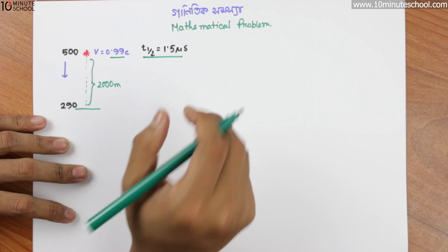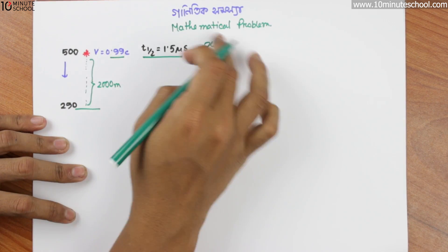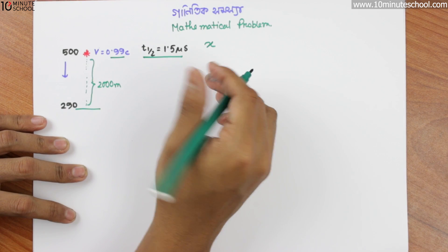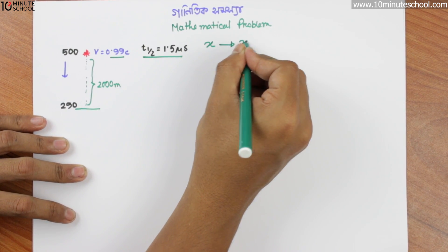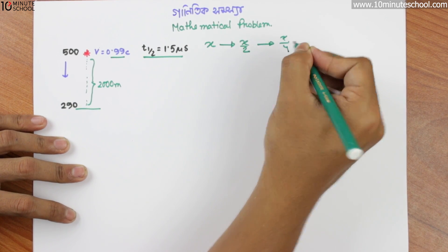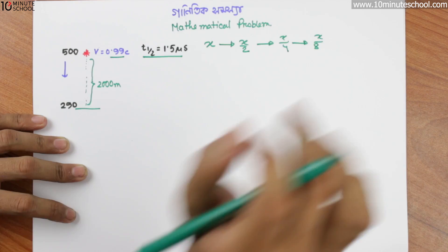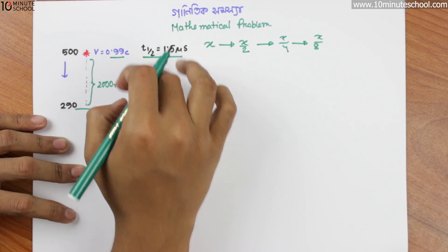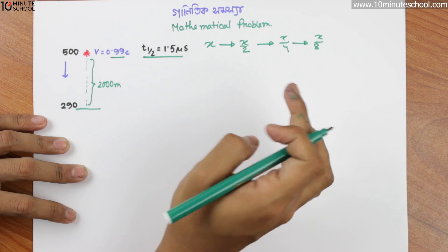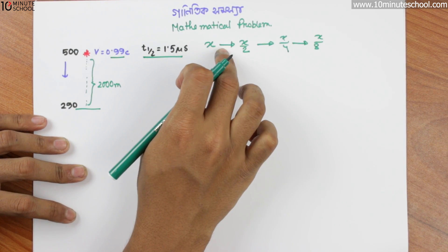The half-life concept: the first half-life is x divided by 2, the second half-life is x divided by 4, and the next is x divided by 8. So this is the half-life, and the half-life value is 1.5 milliseconds.